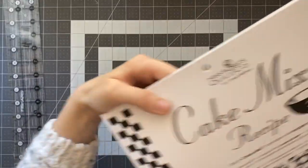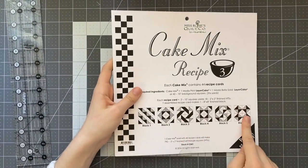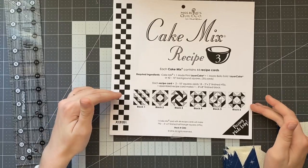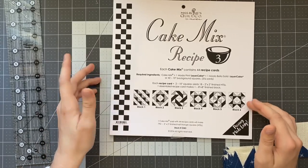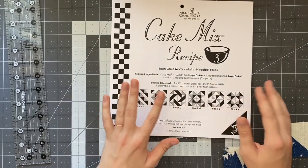You'll notice that on the cover they have different options for block layouts you can choose one of these or you might be making these half square triangles for a different project such as the book that I'm using for my quilt.